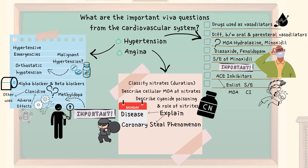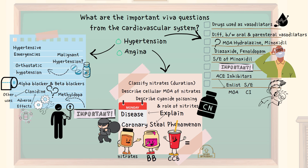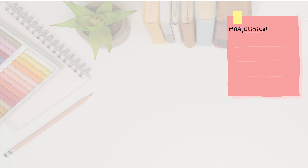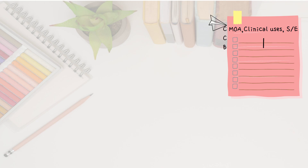What are the advantages of combining nitrates with beta blockers or calcium channel blockers in terms of improved cardiac efficiency and decreased cardiac demand? Describe the mechanism of action, clinical uses, and adverse effects of calcium channel blockers. What is the difference between dihydropyridines and non-dihydropyridine calcium channel blockers, especially in terms of side effects produced on the heart and blood vessels?